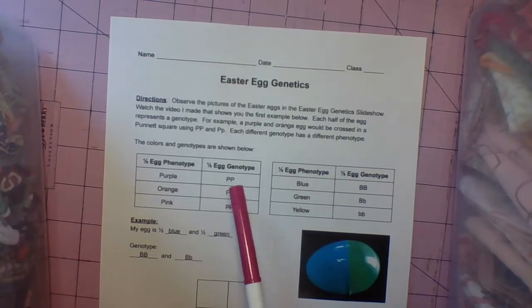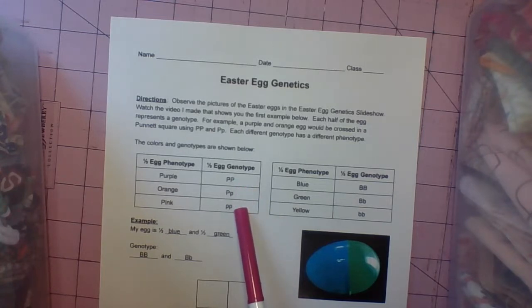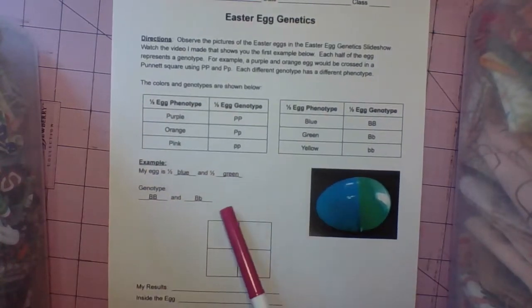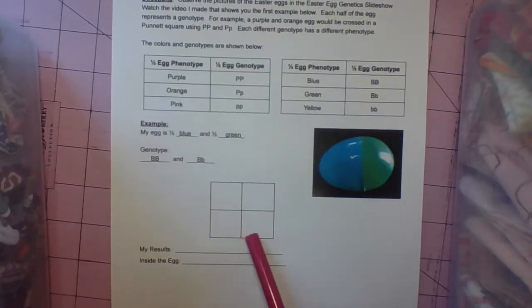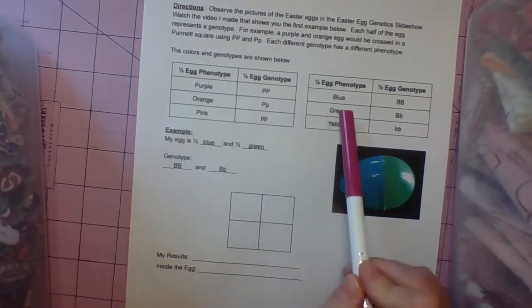For this one, you would think as long as there's a big P there, it would be purple because that's the dominant. But each of these genotypes, remember a genotype is two letters, each of these genotypes code for different phenotypes. So you really got to look at your Punnett square and those four squares inside for the four possibilities and just make sure you check them back with each chart.